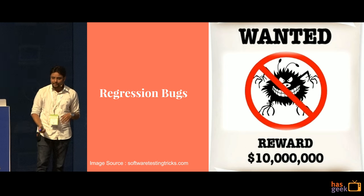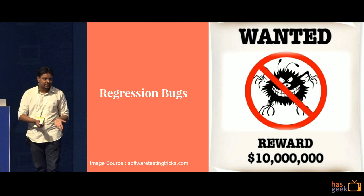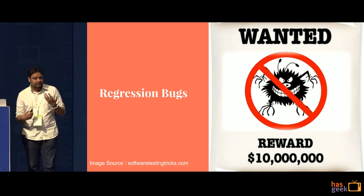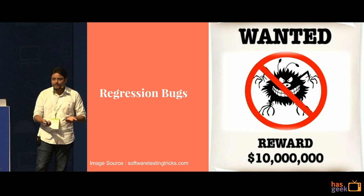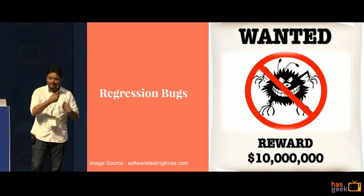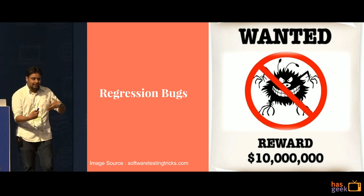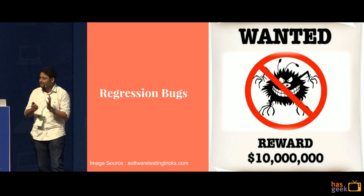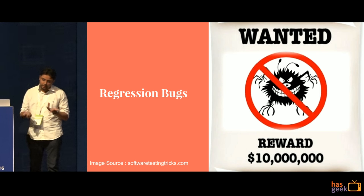When you have code like that you end up with a lot of regression bugs — one developer tries to touch something on a particular screen and ends up breaking somebody else's feature. This also affects your development cycle because everything you touch on that screen has to go through a thorough QA process. Imagine adding just one line of code and saying it will take four days to test but only an hour to develop — that was becoming the bottleneck for the company.